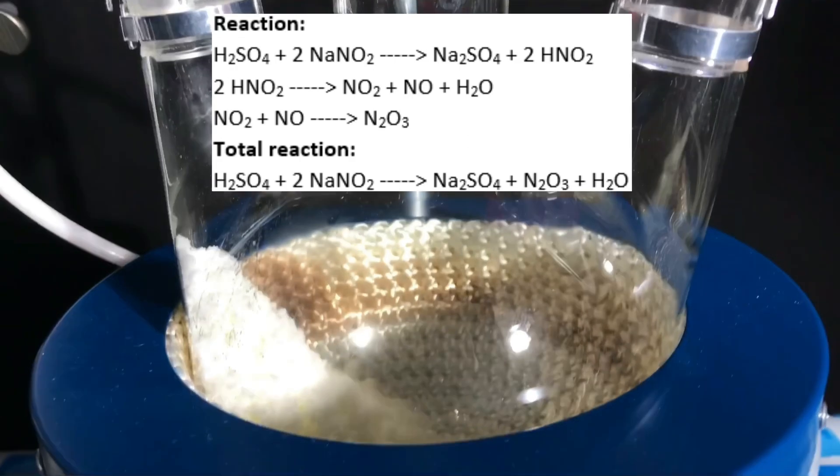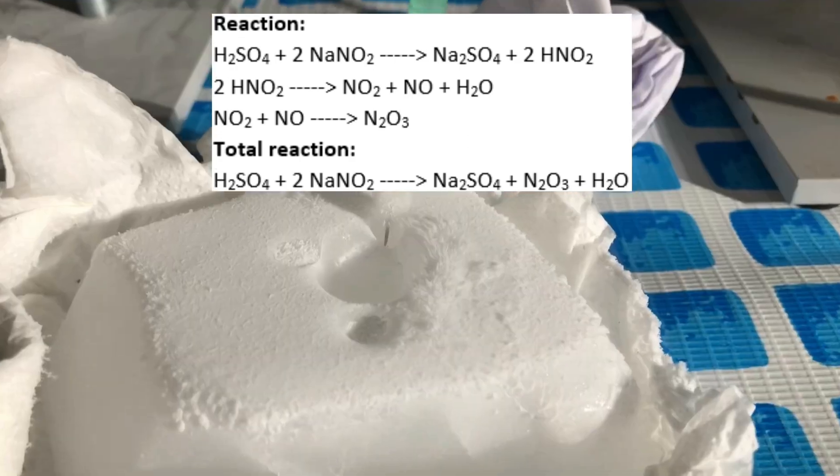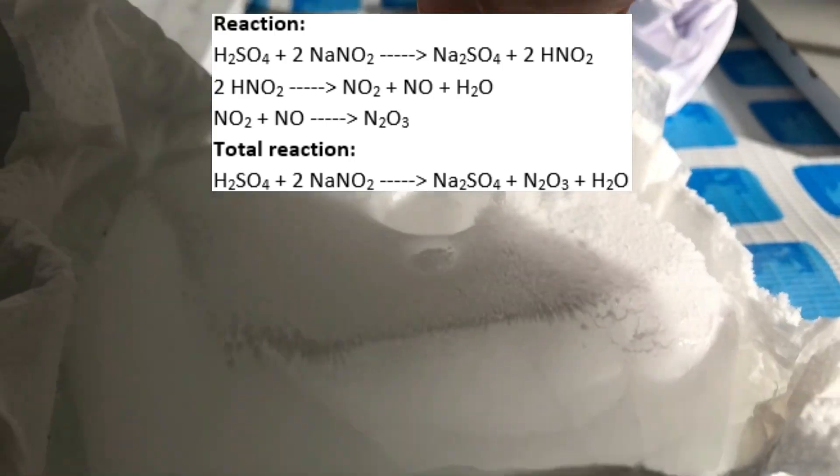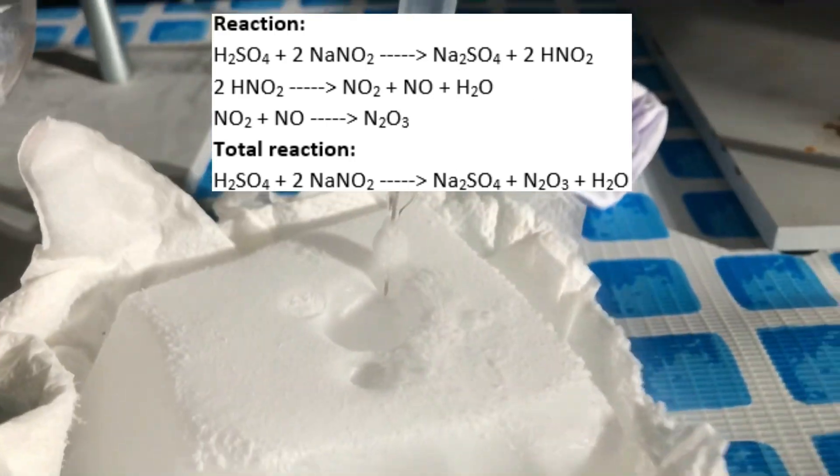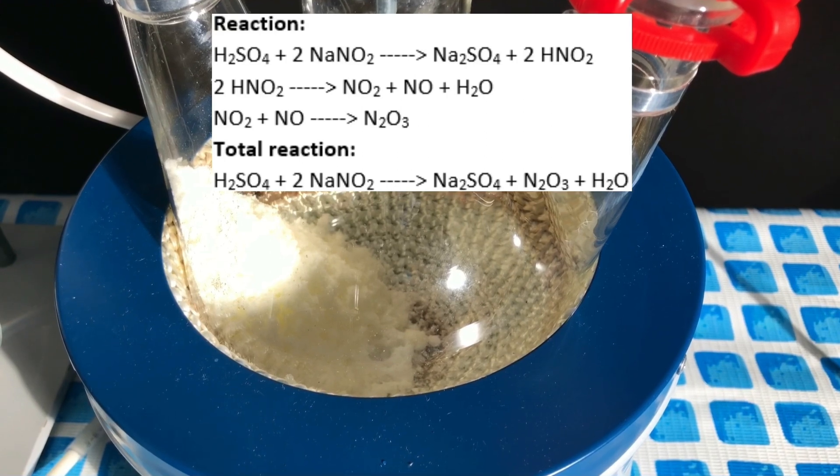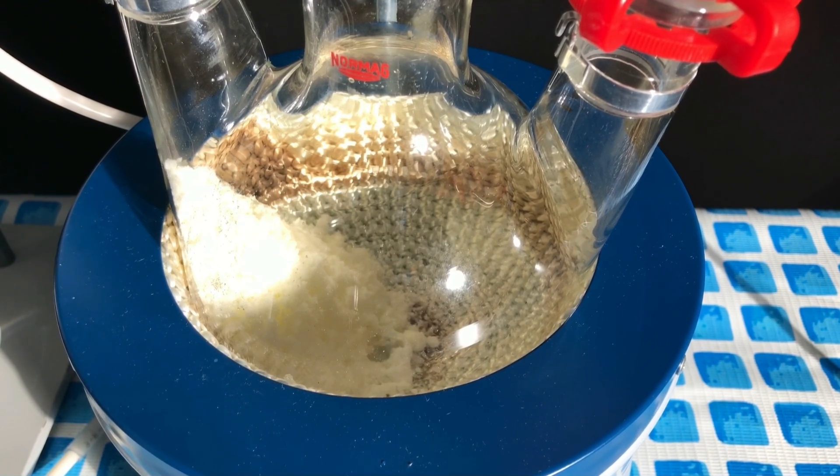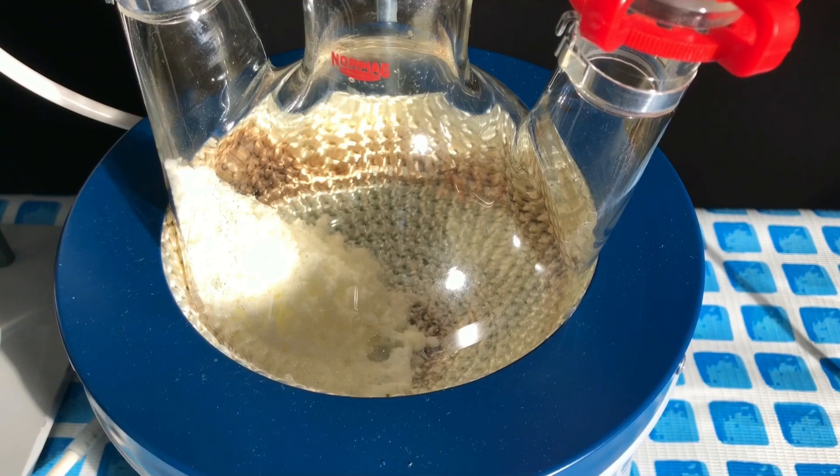Sulfuric acid first reacts with sodium nitrite to form sodium sulfate and nitrous acid. Most of the nitrous acid then decomposes to form equimolar amounts of nitrogen dioxide and nitrogen monoxide. These can later be condensed to form dinitrogen trioxide. With leftover oxygen, some of the nitrogen monoxide would react with oxygen to form nitrogen dioxide. This would completely destroy the purity of our product.